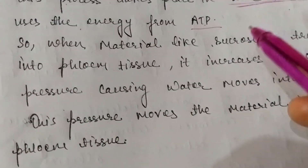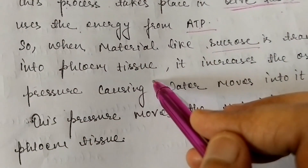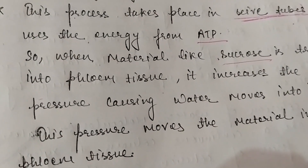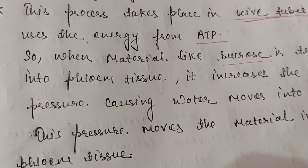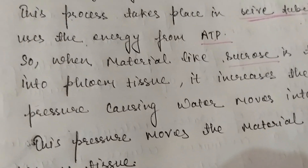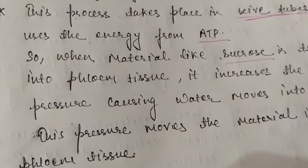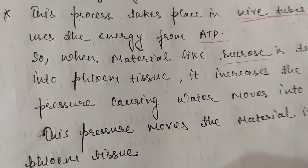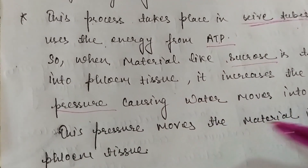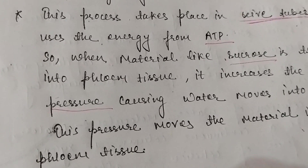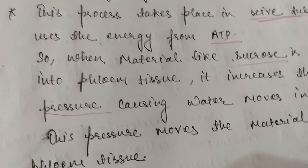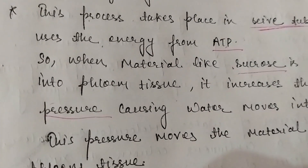All material like sucrose is transferred into the phloem tissue. When it is transferred into phloem tissue, its pressure increases greatly, due to which water moves into it. So the food substance — sucrose, starch — moves in the phloem. This osmotic pressure moves the material in the phloem tissue. Due to this pressure, the material in the phloem tissue moves to its destination.